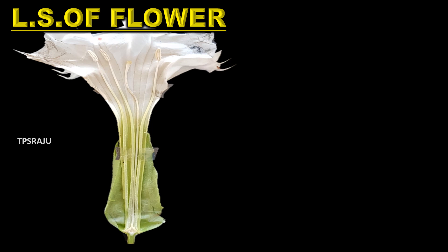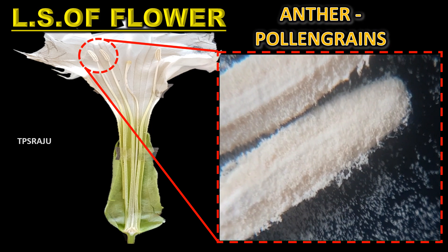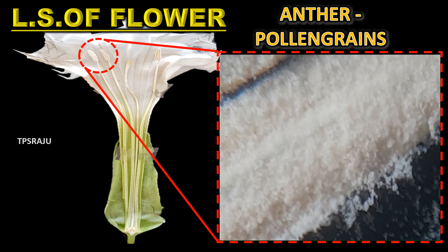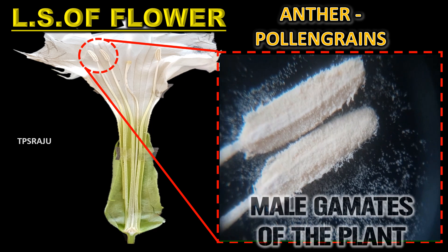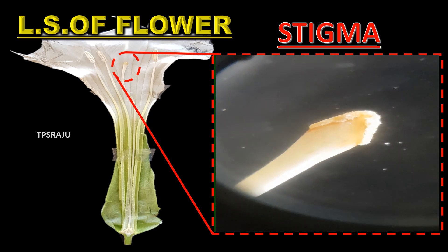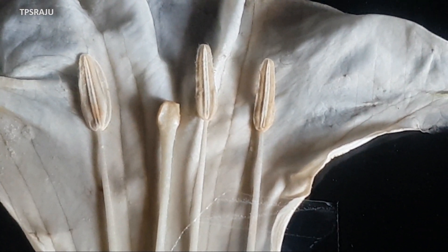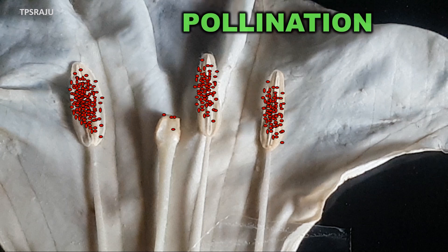These are the anthers — pollen grains are produced in the anther. Observe here: these granule-like structures are pollen grains, which are the male gametes of the flower. This is the stigma. During pollination, pollen grains fall down onto the stigma. Observe here — pollen grains are transferring from anther to stigma. This is the process of pollination.